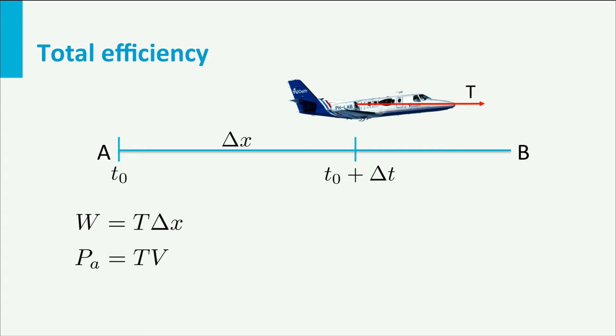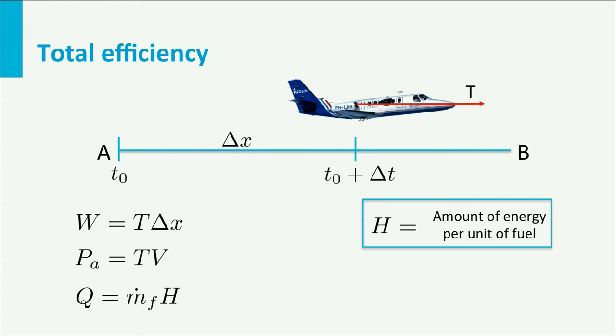But in order to create thrust we need to provide power, for example by burning fuel. This power is called thermal power Q. For an engine powered by fuel, this equals the mass flow of fuel multiplied with the energy that is contained in each kilogram of fuel, a constant chemical value we call H.